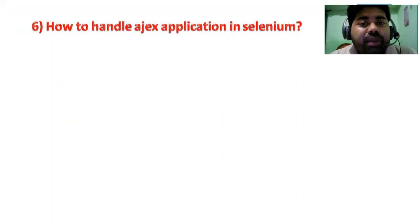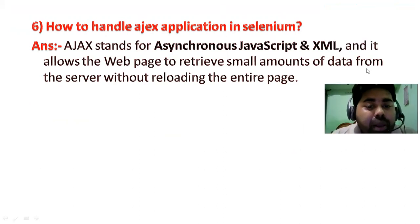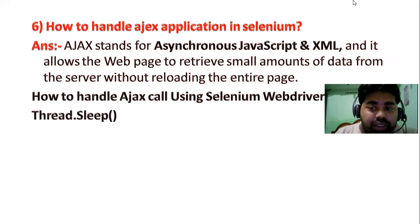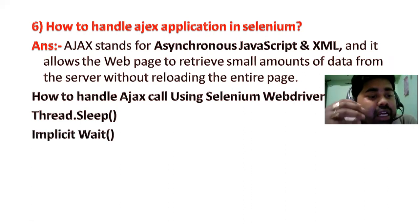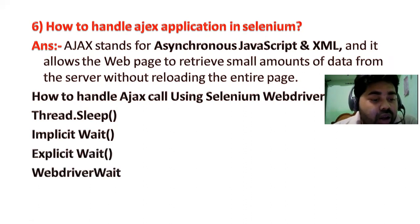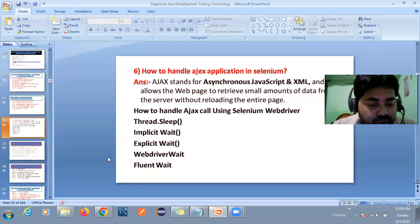Another question: how to handle an AJAX application. An AJAX application is a dynamic application. AJAX stands for Asynchronous JavaScript and XML. It allows the web page to retrieve a small amount of data from the server without loading the entire page. To handle AJAX using Selenium WebDriver, we can use wait statements — Thread.sleep (which is part of Java), implicit wait, explicit wait, or fluent wait. Using these wait strategies we can handle AJAX applications.